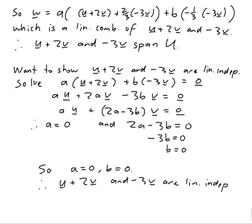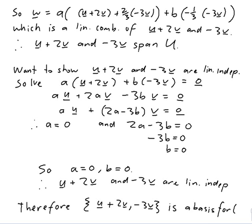Therefore u plus 2v and minus 3v are linearly independent. Because the only solution to that original equation with the a's and b's is zero and zero. So since they both span and are linearly independent, therefore together as a set is a basis for U.